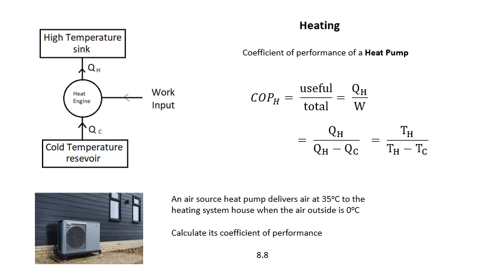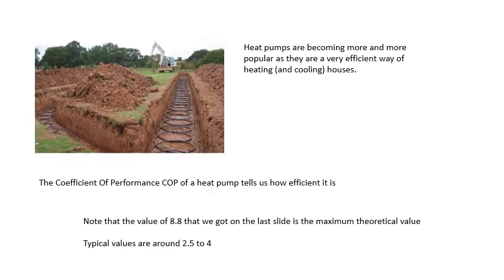The answer is 8.8 — this is the maximum theoretical coefficient of performance. You're not going to get 8.8 in practice. Heat pumps are becoming more and more popular because they're a very efficient way of keeping your house warm. The coefficient of performance of a heat pump tells us basically how efficient it is. 8.8 is a maximum theoretical value; typical values are from about 2.5 to 4. They are actually more efficient in the summer than in the winter — 2.5 would be a winter value, 4 would be a summer value.